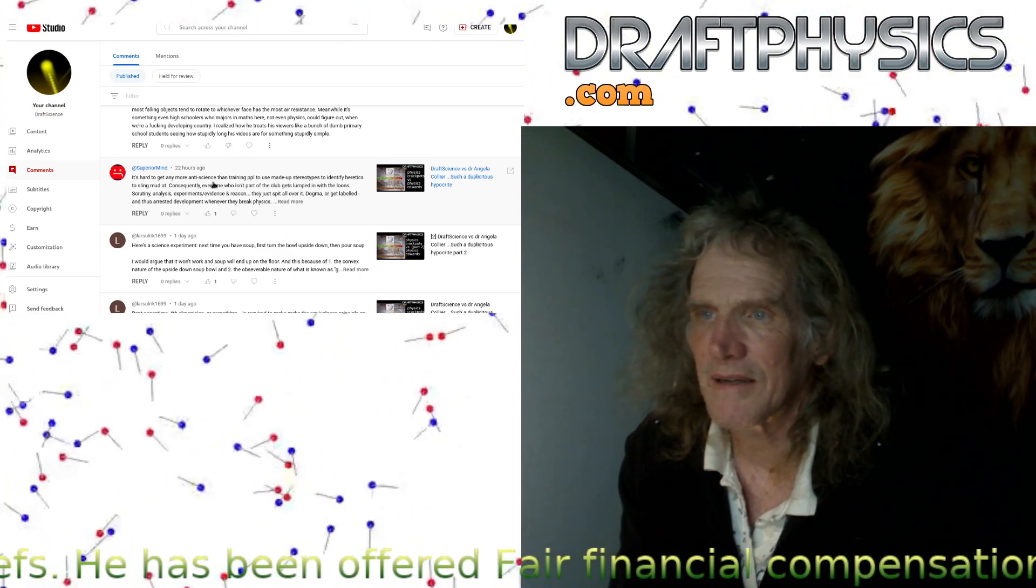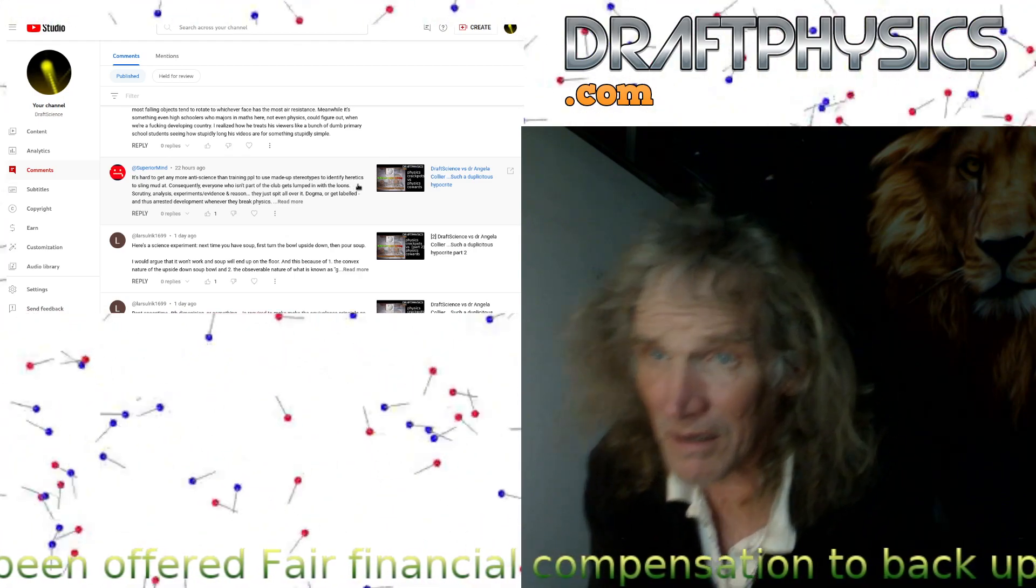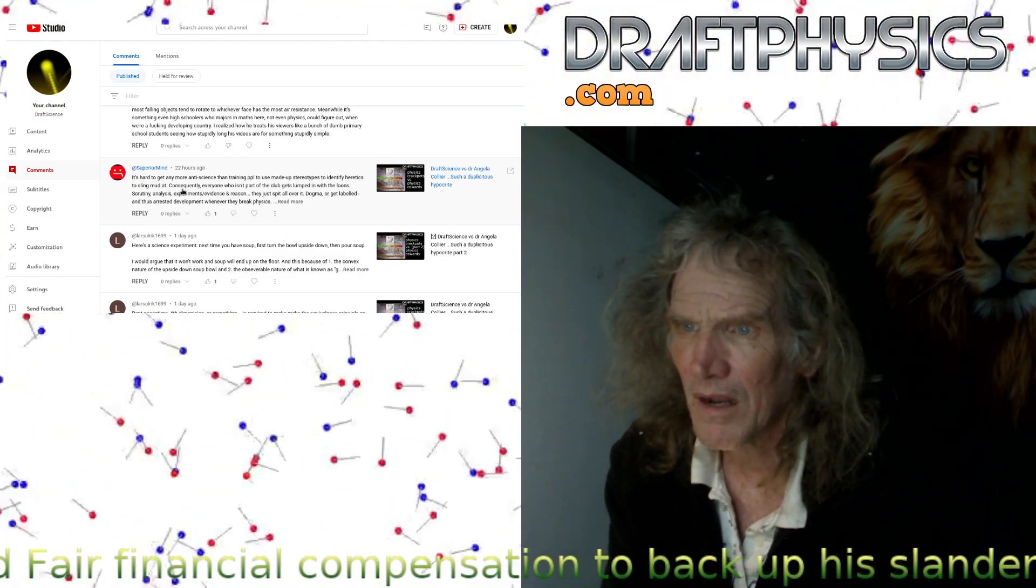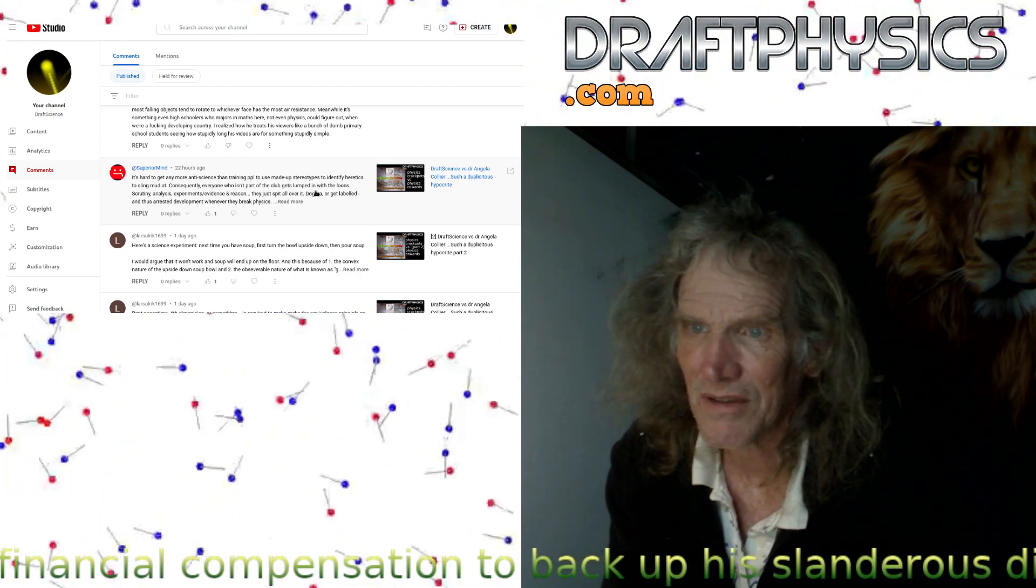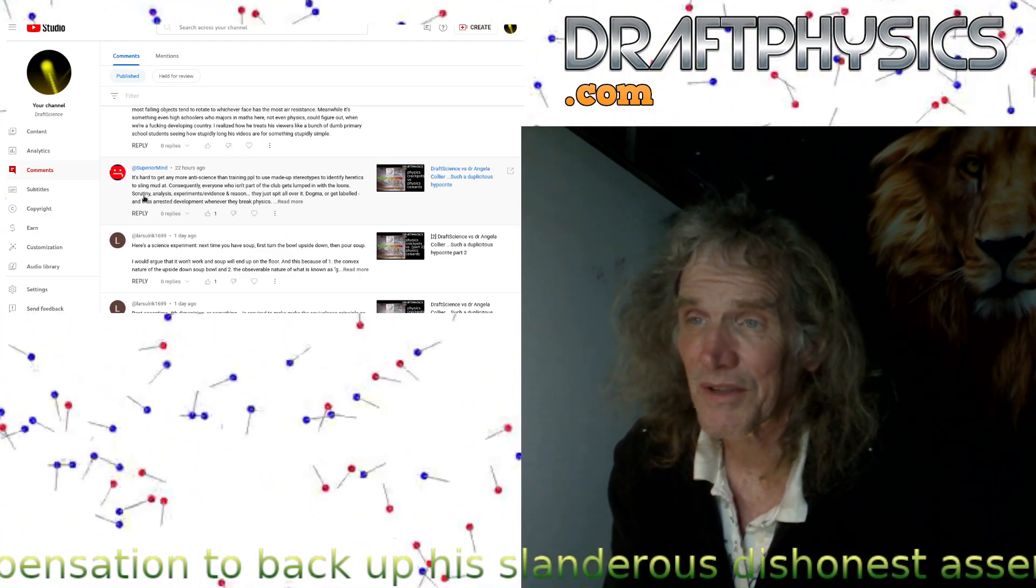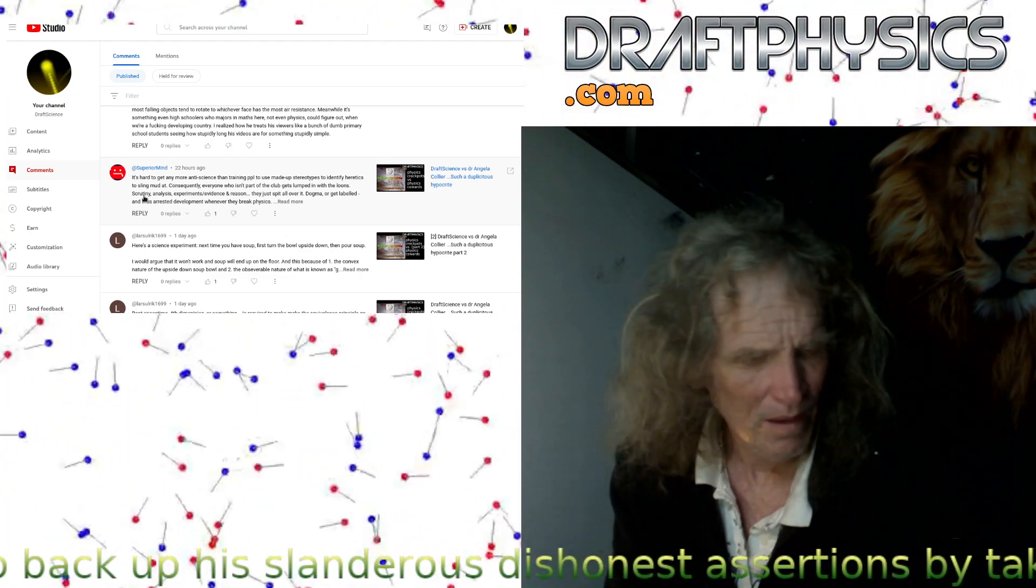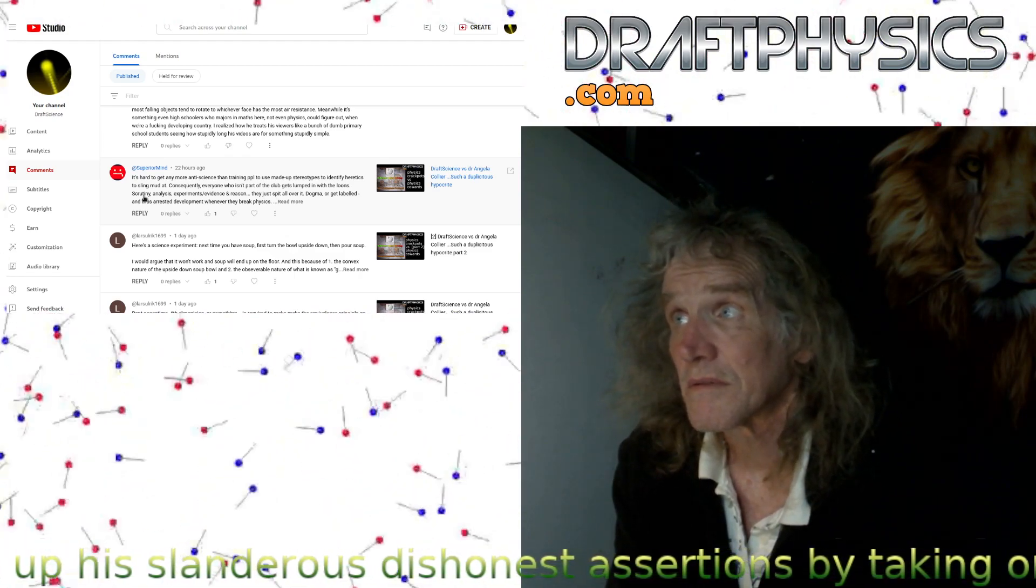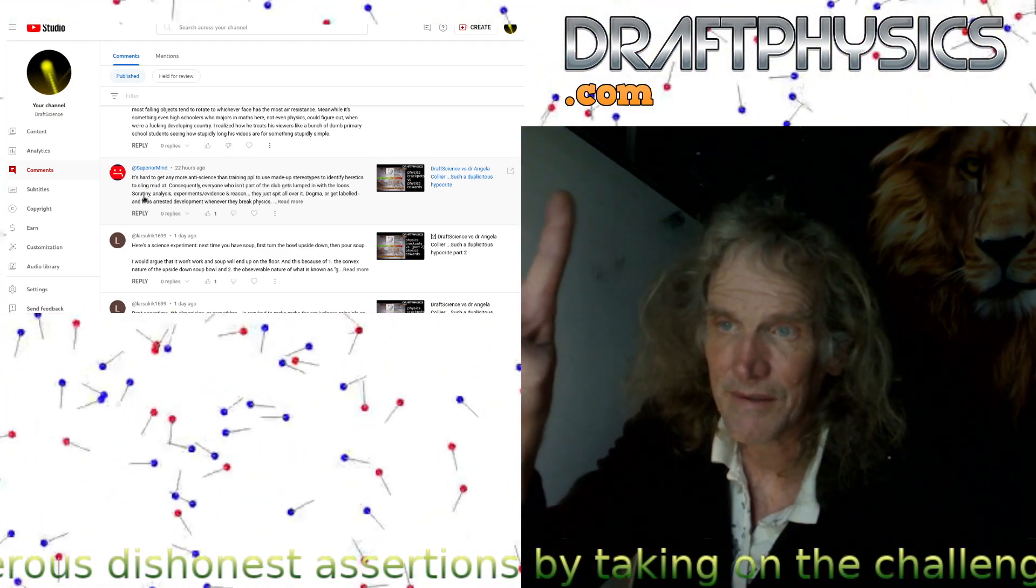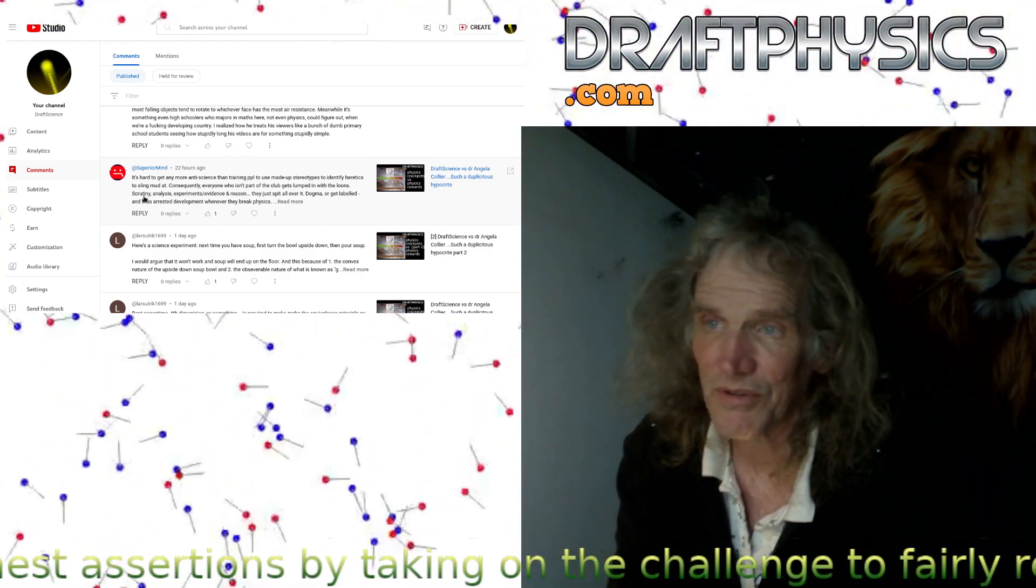It's hard to get any more anti-scientific than training people to use made-up stereotypes to identify heuristics to sling mud at. Consequently everyone who isn't part of the club gets lumped in with the loons. Well, everybody attempts to do this. You could argue that affiliations, if you're part of a club that is chauvinistic or racist or something, I mean that's to your detriment. There's some associations you're just stuck with.